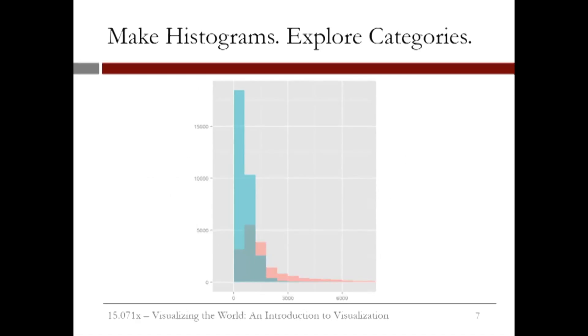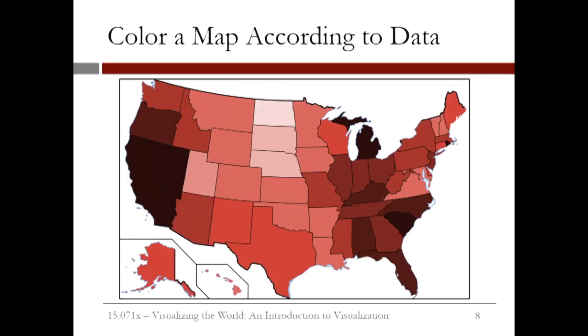The next plot helps us visualize histograms of different categories using the Hubway data. This plot shows US unemployment by state, the lighter colors corresponding to smaller unemployment, and the darker colors corresponding to larger unemployment rates.